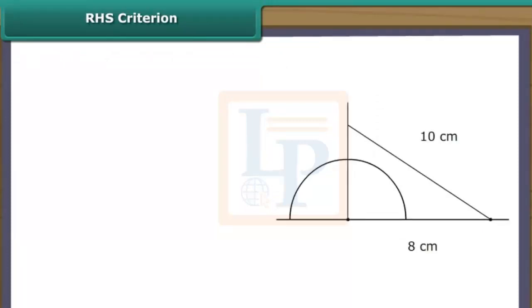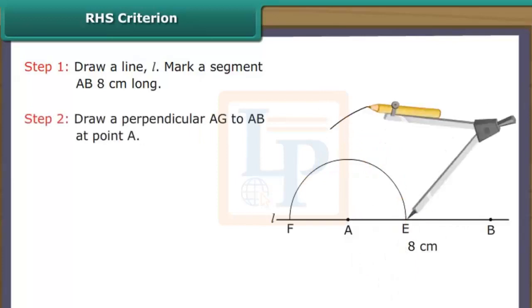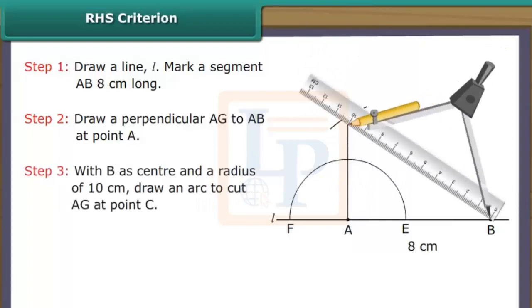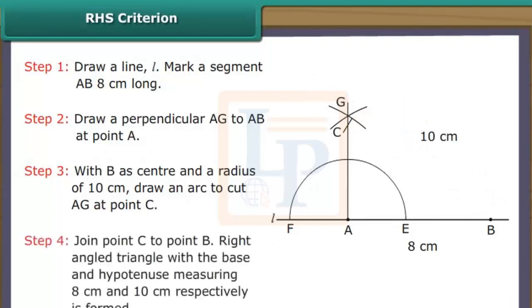RHS criterion: Let us draw a triangle one of whose angles measures 90 degrees and the base and hypotenuse are 8 cm and 10 cm respectively. Draw a line L and mark a segment AB 8 cm long. Draw a perpendicular AG to AB at point A. With B as center and a radius of 10 cm, draw an arc to cut AG at point C. Join point C to point B. The right angled triangle with a base and hypotenuse measuring 8 cm and 10 cm respectively is formed.